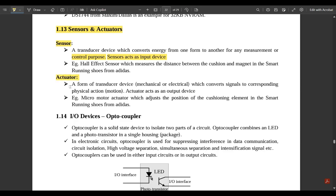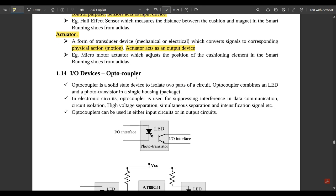An actuator is a form of transducer device, mechanical or electrical, which converts the signal to corresponding physical action or motion. It acts as the output device. For example, the micromotor actuator adjusts the position of the cushioning element in smart running shoes from Adidas. Next, we'll see some very important I/O devices. Any one of them would definitely come in the exams. The first one is the optocoupler.